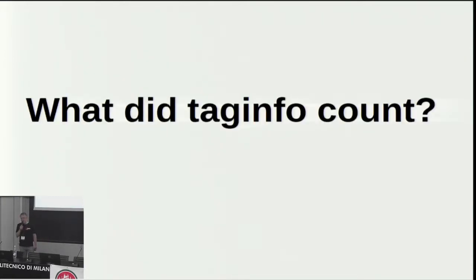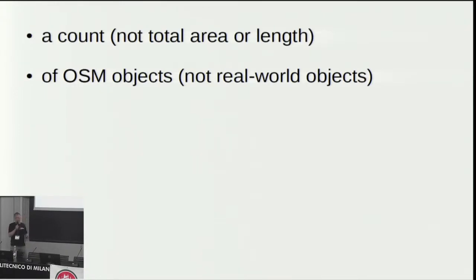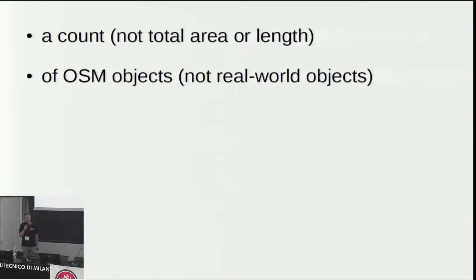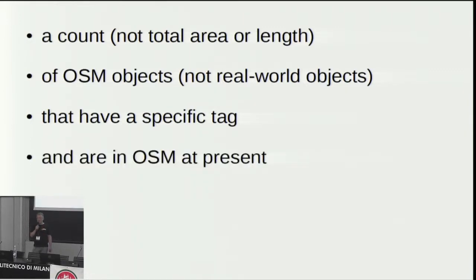Maybe our initial assessment about the importance of transformers wasn't that correct after all. So what exactly did tag info count? Tag info counts how many of something there are, not a total area or total length, which might sometimes also be interesting. Tag info counts OpenStreetMap objects, not real-world objects. There might be a large forest that is actually mapped as three disjunct areas in OSM — that would then be a count of three in tag info. Tag info counts things that have a specific tag and are currently in OpenStreetMap, so it doesn't look at the history.